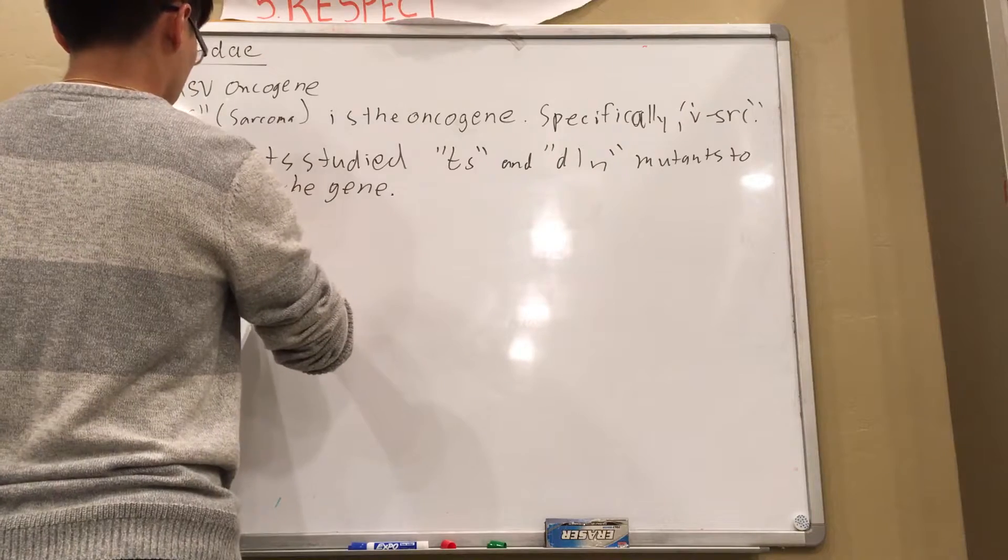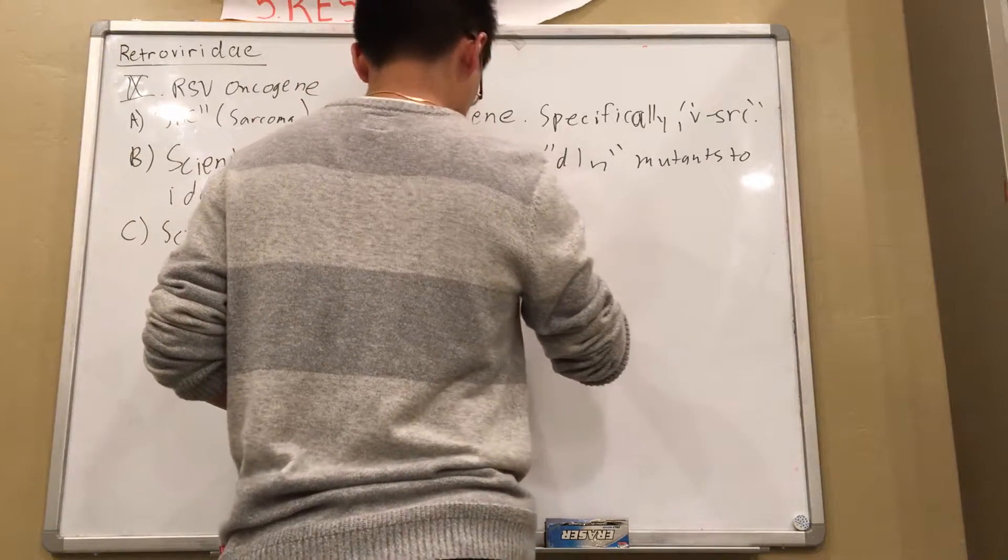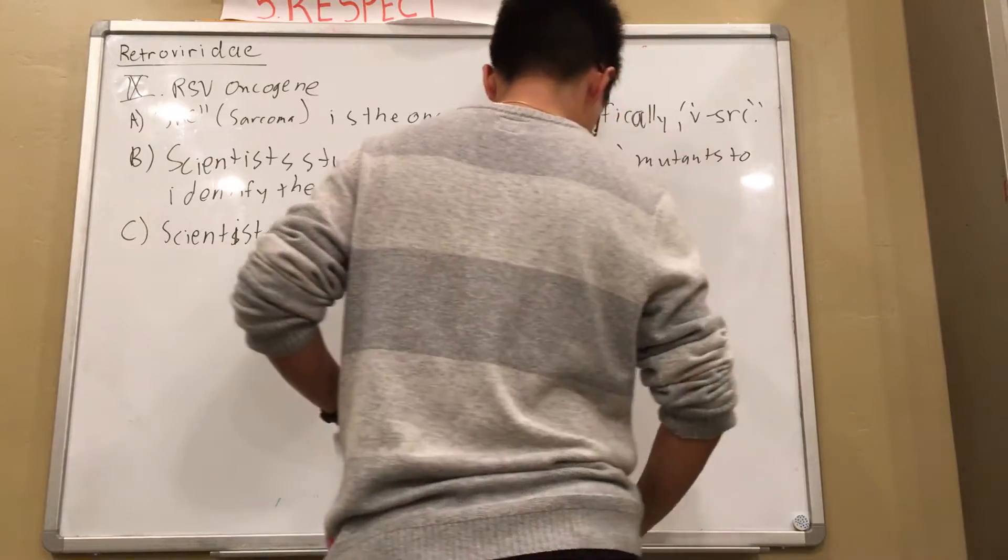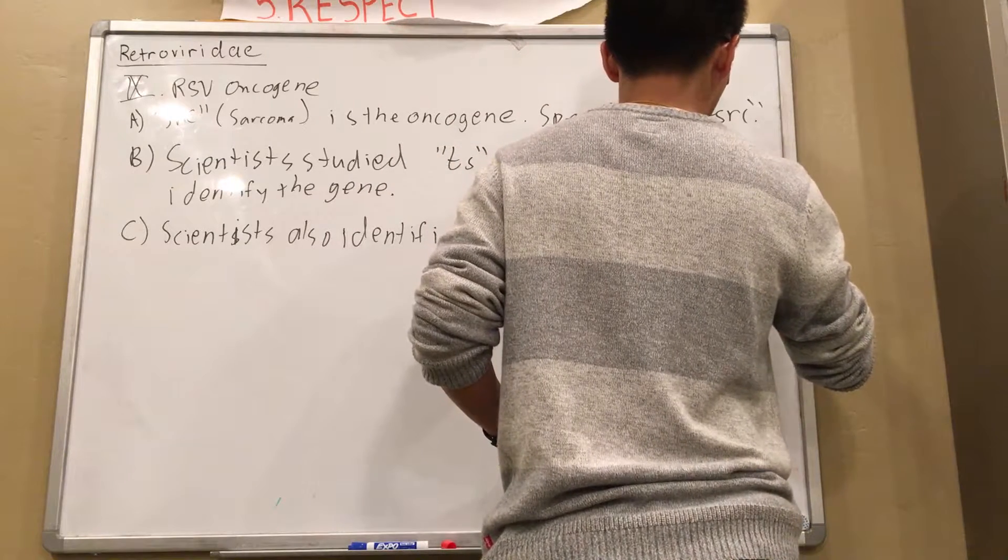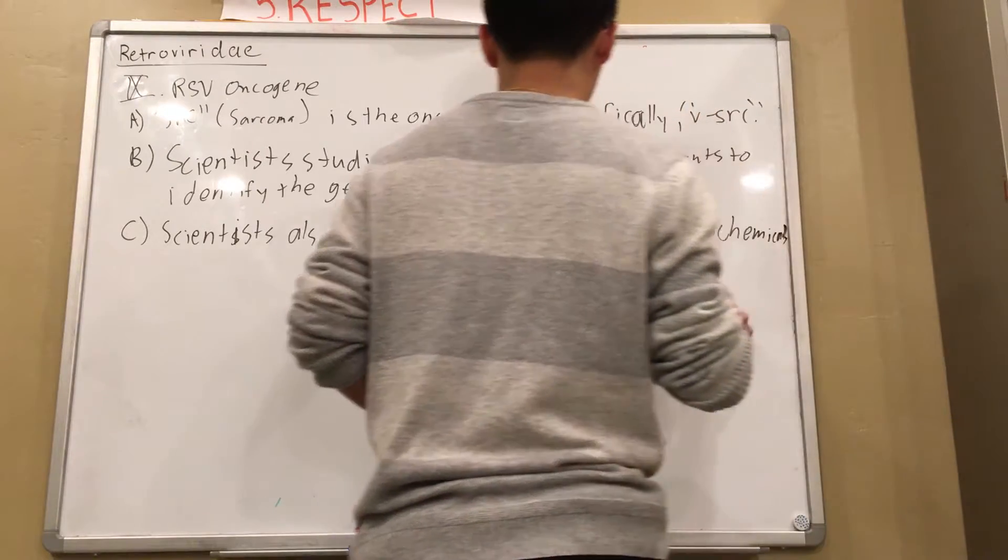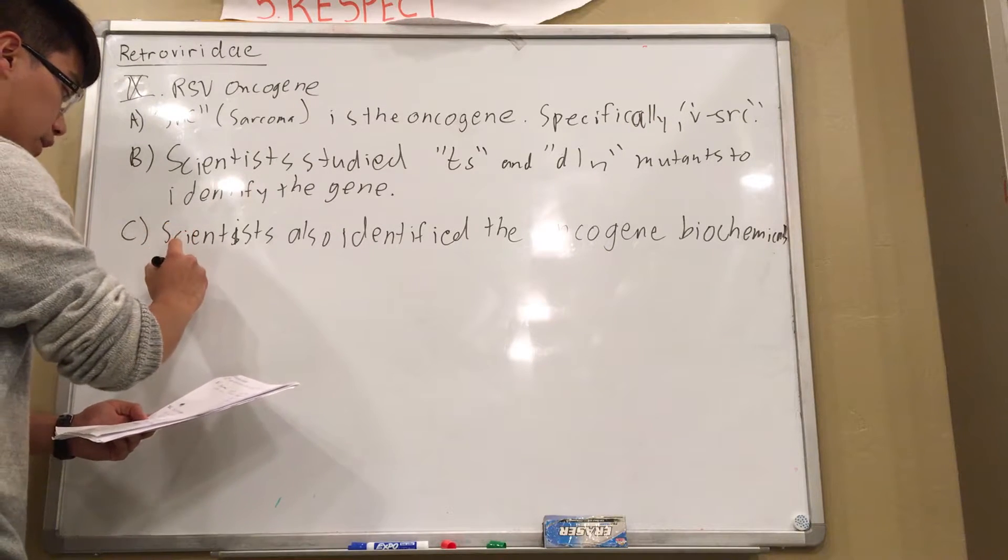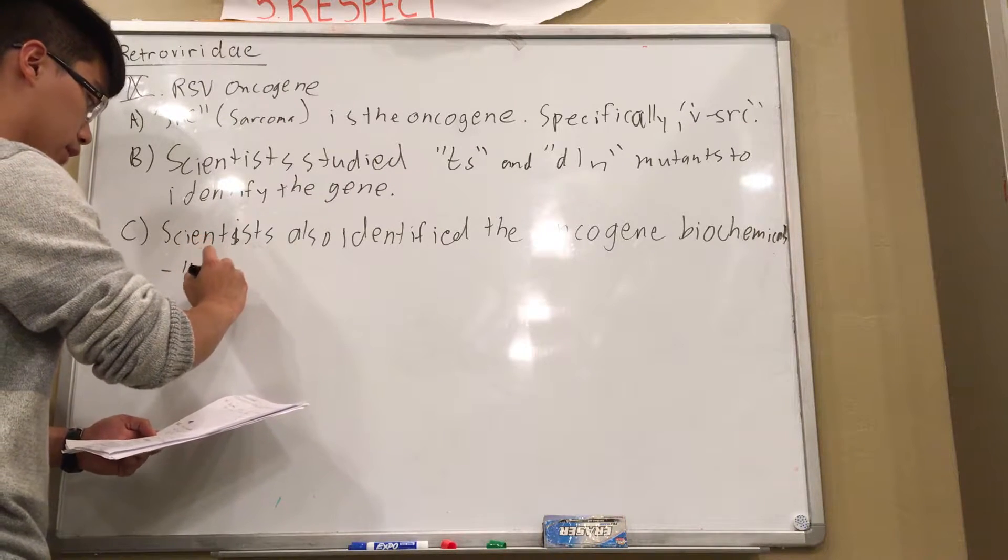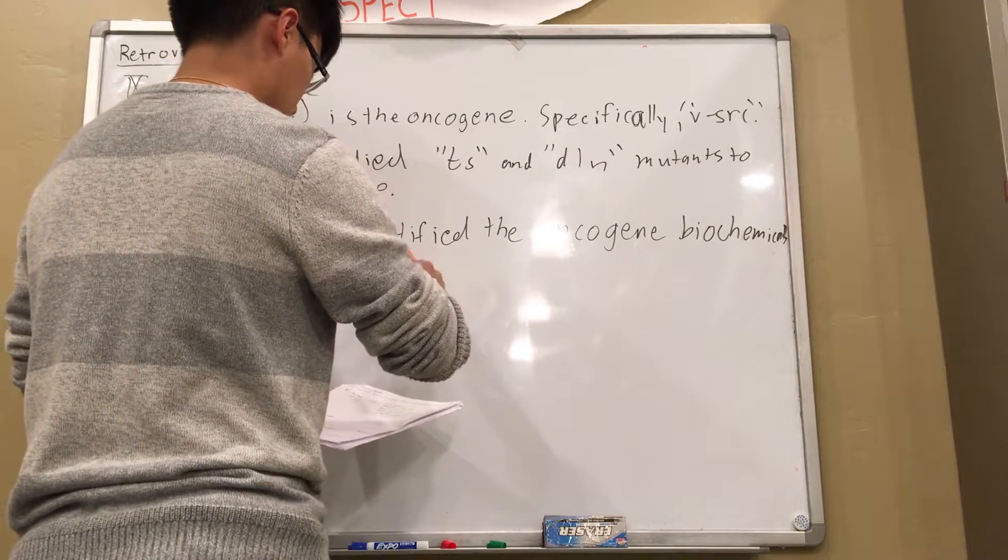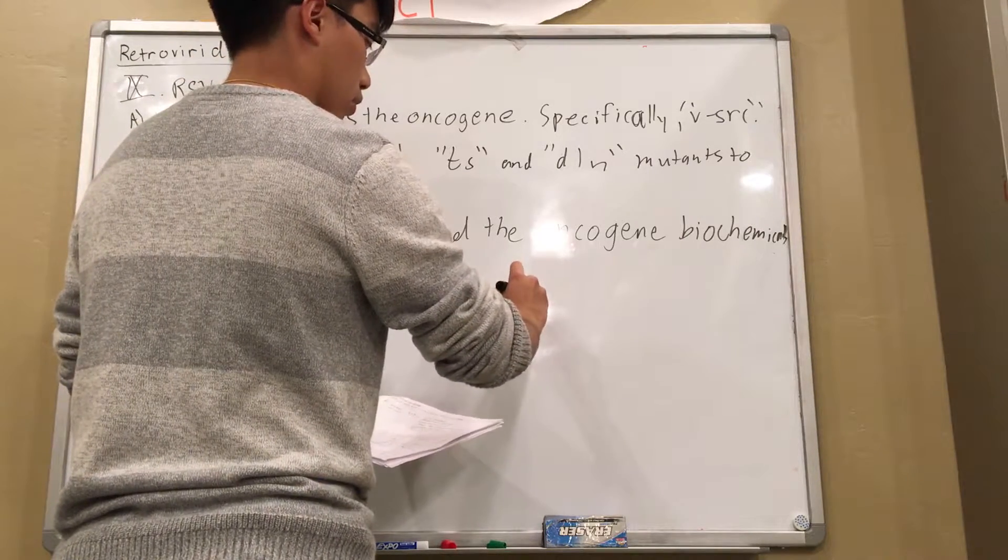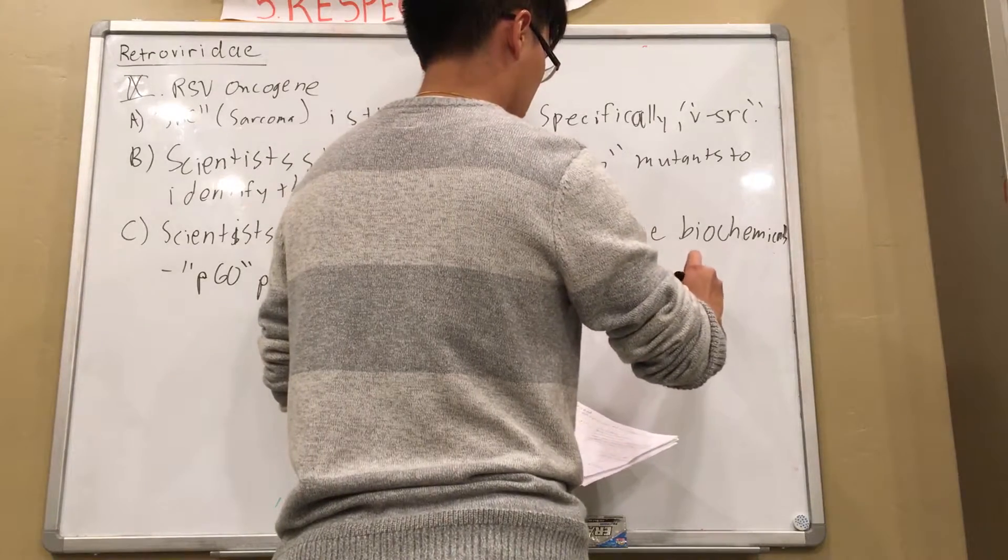The scientists also identified the virus, or the gene of the virus, the oncogene, biochemically. So Dr. Sears likes to talk about scientists studying it genetically and biochemically. This is the biochemical part. The scientist knows that there's this protein called P60. So this P60 protein was a 526 amino acid product of V-SARC.